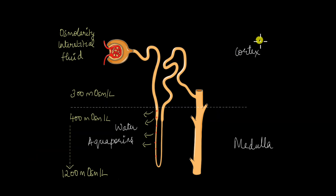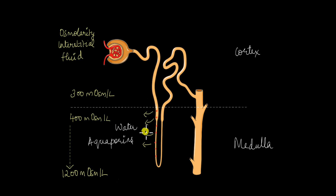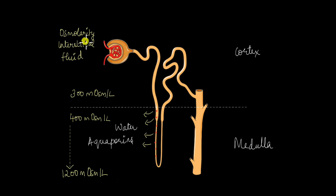In the previous video I also talked about how the nephron extends from the cortex into the medulla. Some nephrons extend deep into the medulla whereas some are just at the tip of the medulla, but whatever it is, the loop of Henle is always in the medulla. This is there for a very specific reason.